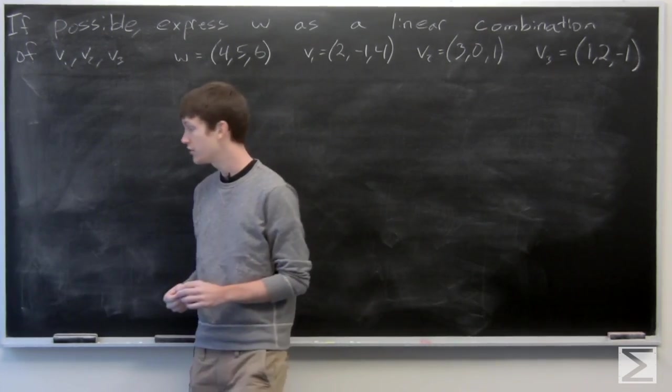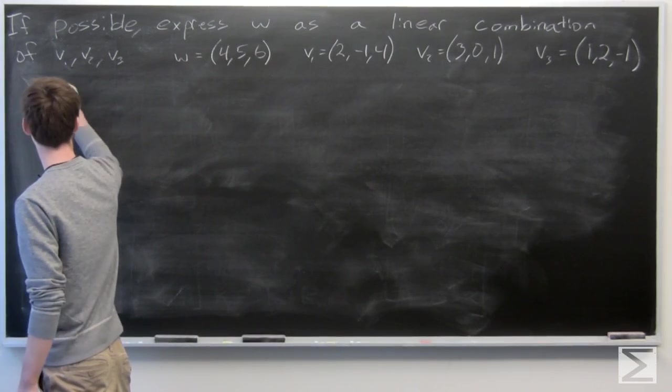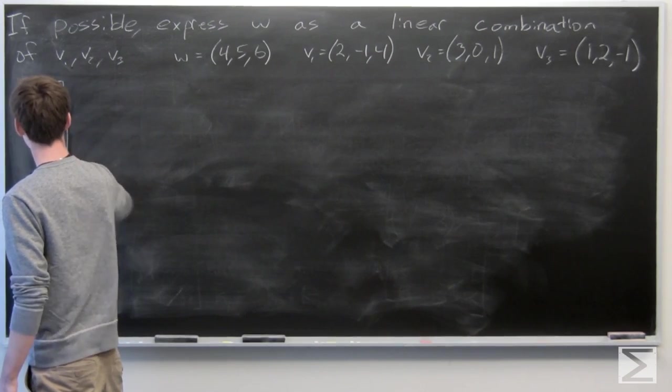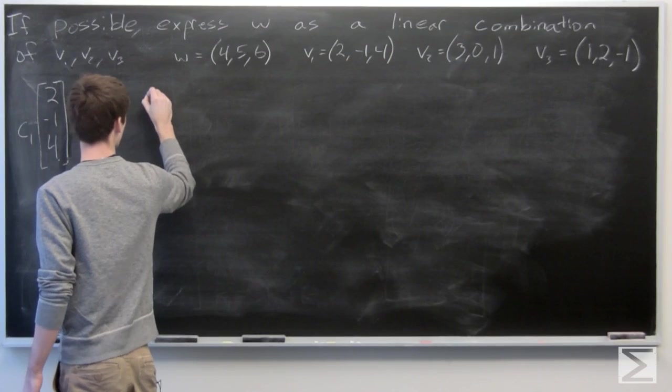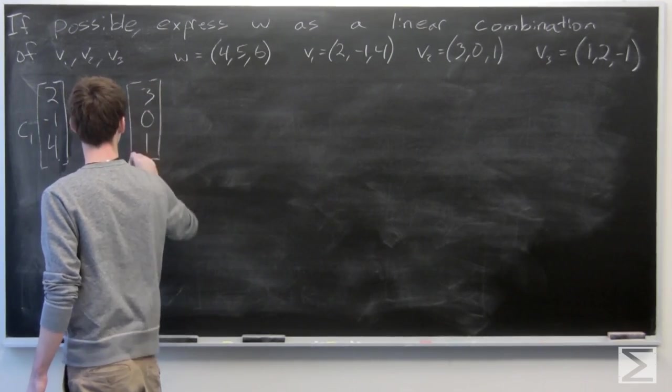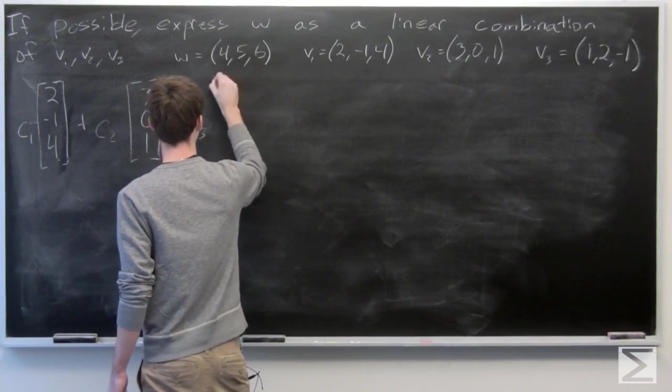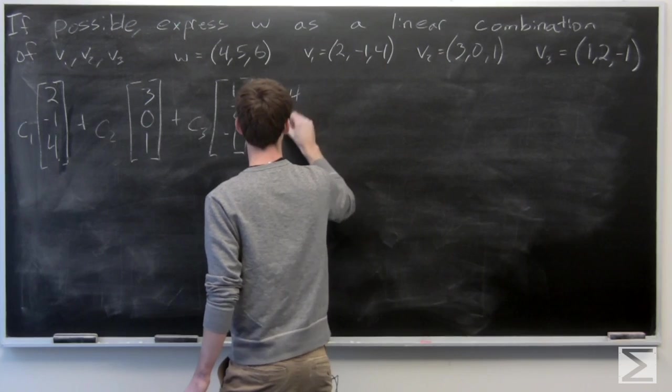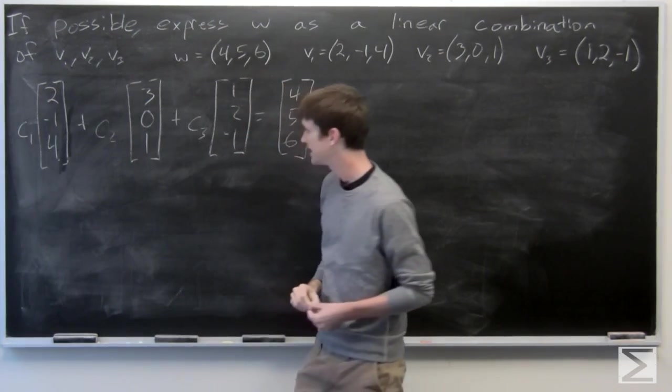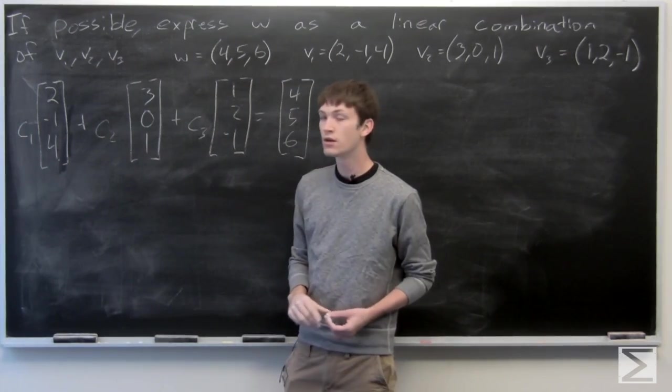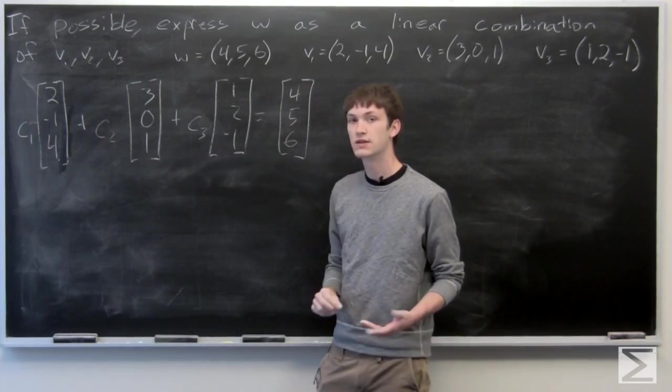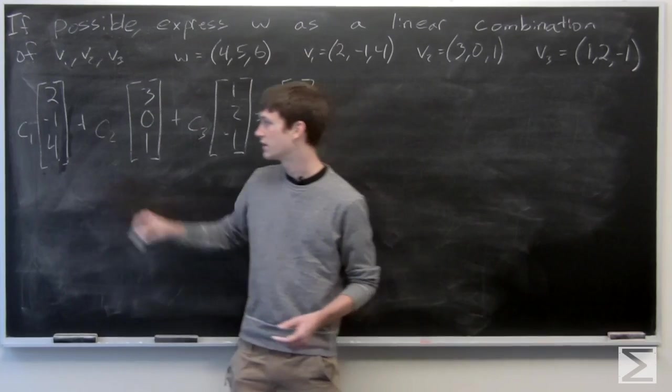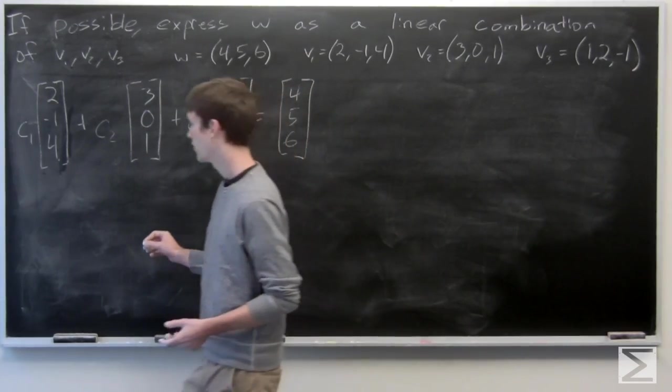So we want to see if w is a linear combination. So what that means is we have... So we want to see if there are constants c1, c2, and c3 such that this system is solved. So we have our vectors v1, v2, and v3, and we want to find our constants. So we can write this actually as a system, three equations.